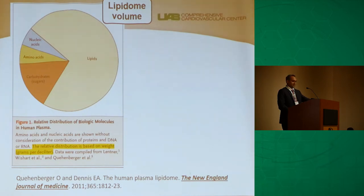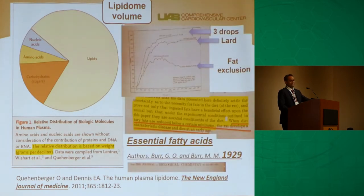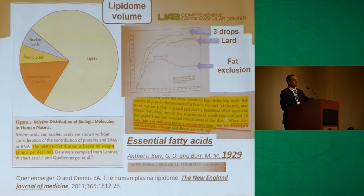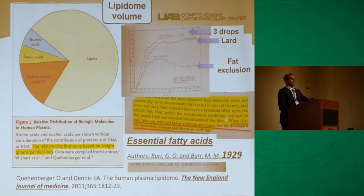A very classical 1929 study by a husband-and-wife team removed fats from rodents — rats and mice — and those animals survived less. When they added three drops of fat back, survival improved. That's where the term 'essential fatty acids' comes from: if they are not present, we must exclusively obtain them from external sources, either from animal or plant food.